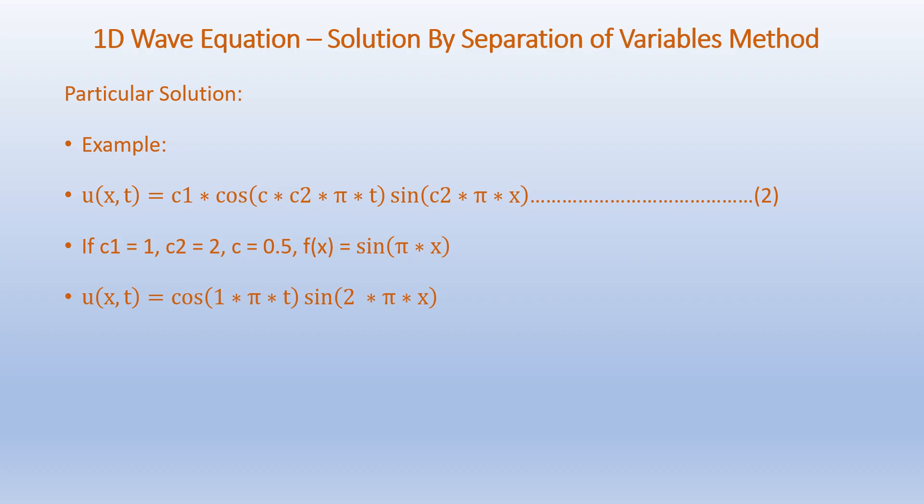As a specific case, let us consider C1 equals 1, C2 equals 2, and C equals 0.5. Here C1 and C2 are constants and C represents the wave propagation speed. Accordingly, F of X equals sin(π·X), and U of X comma T equals cos(π·T)·sin(2π·X). This is the final solution for the 1D wave equation for this particular case.